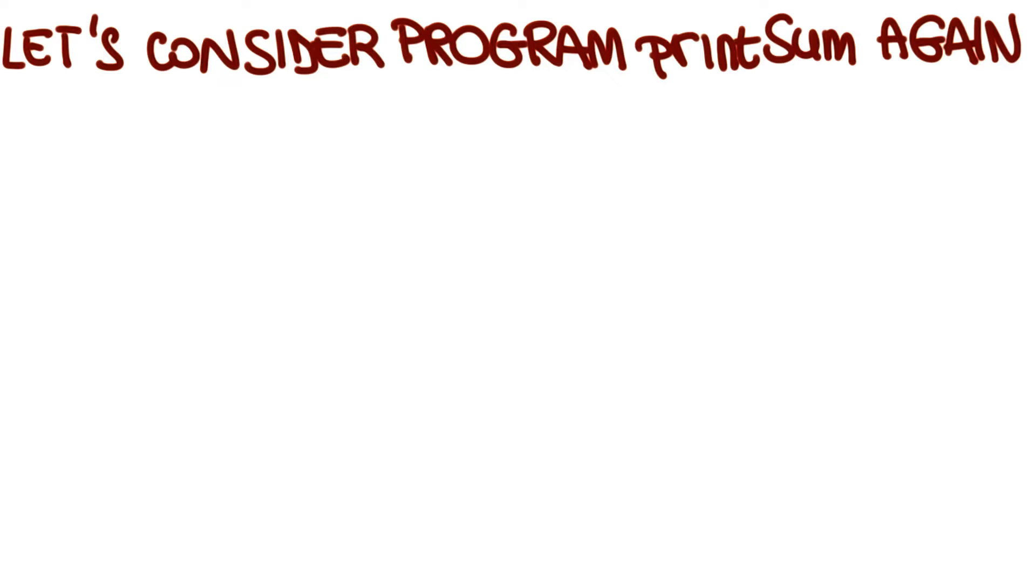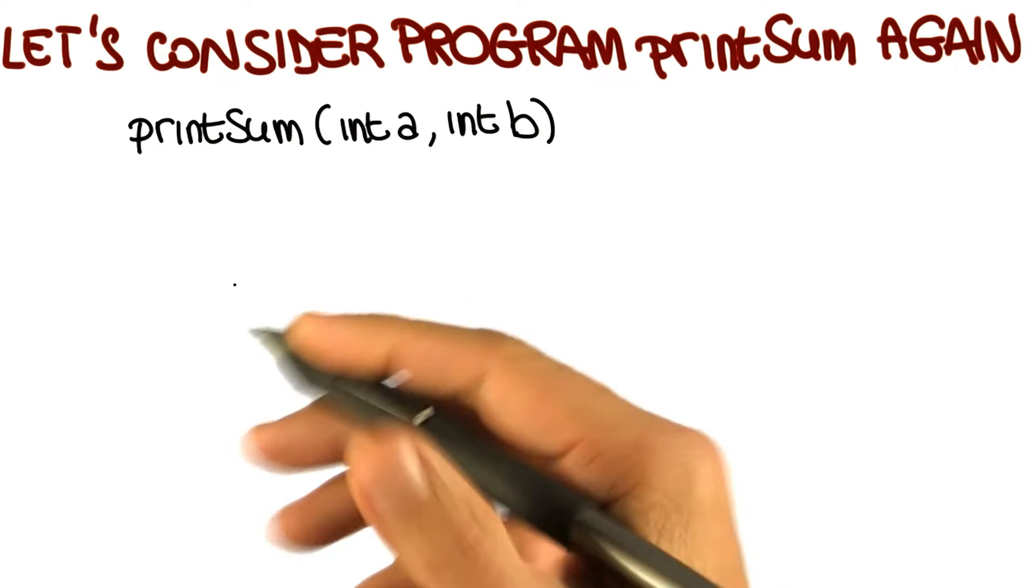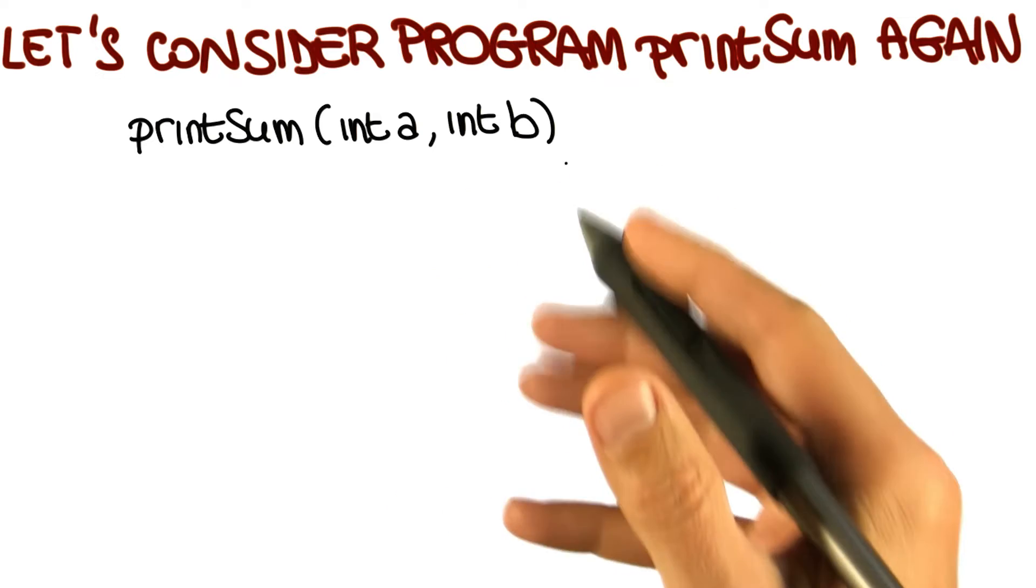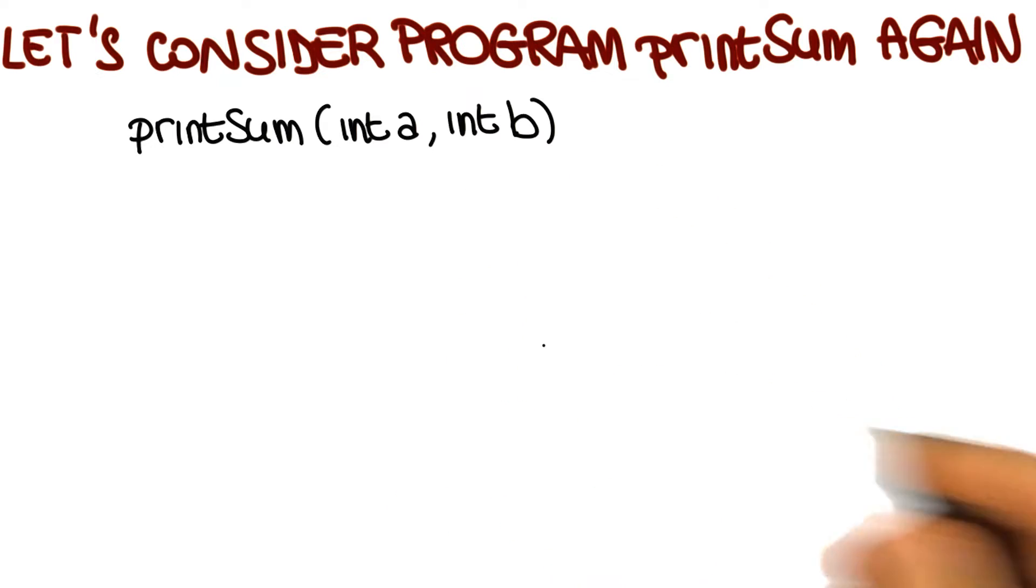So let's start our lesson on white box testing by considering, again, program printSum. If you remember, this is the same program that we used when we were talking about black box testing. It's the program that takes two integers, a and b, and produces, as a result, the sum of the two.